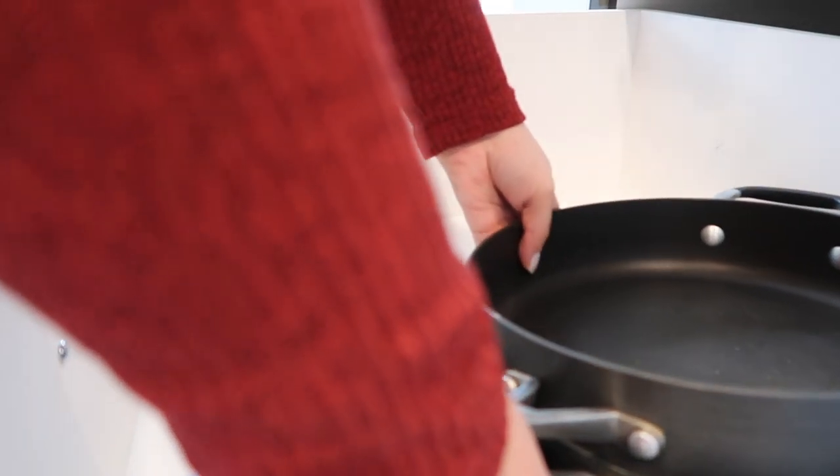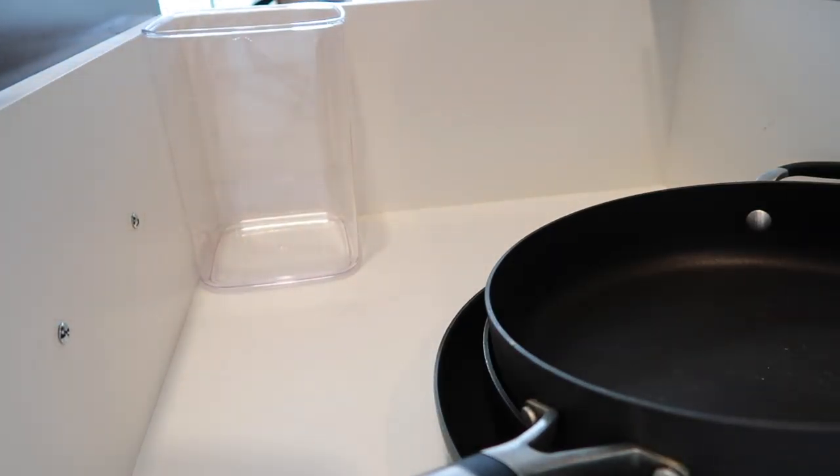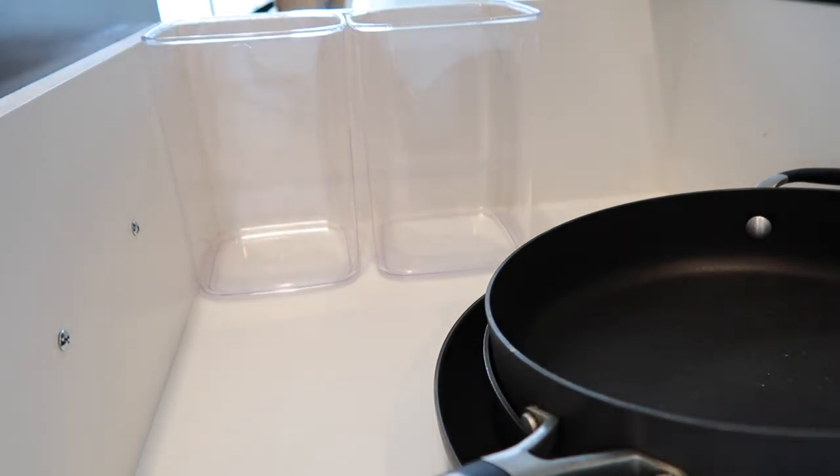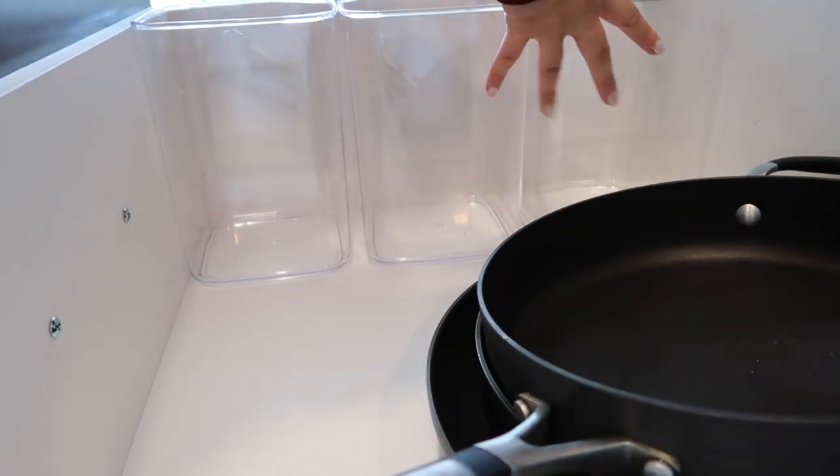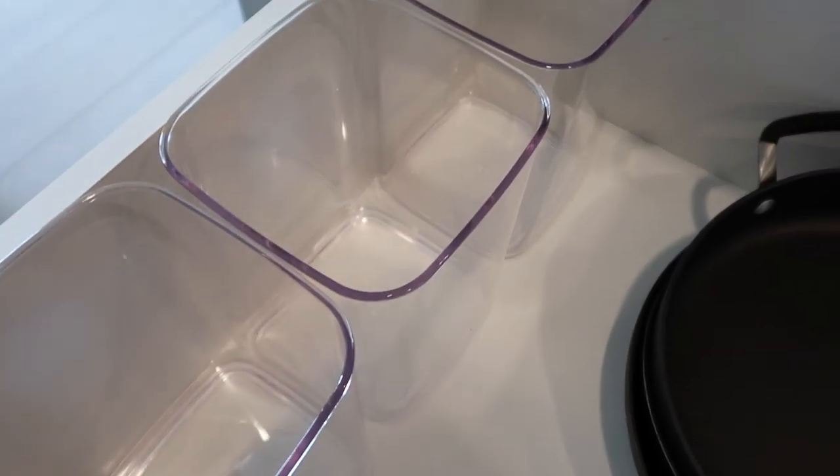The first thing that I decided to do was put my frying pans back into the drawer because they take up the most amount of space. I kind of wanted to form the rest of the organization around it. And then my second thing that I wanted to do was make sure that these bins actually fit in the drawer and that the drawer will close. And they were a perfect fit for this specific drawer, which is great.